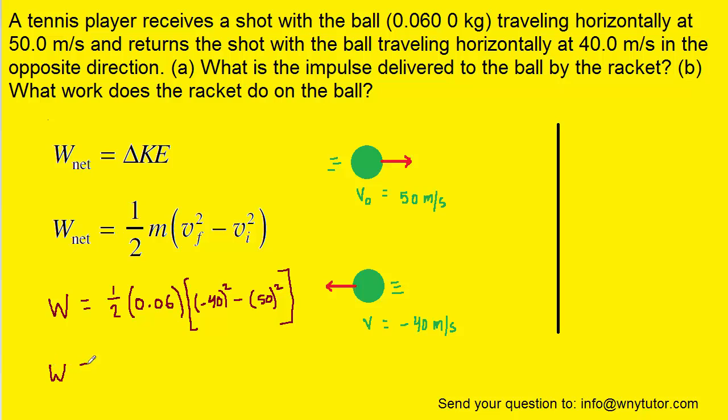And when you simplify that on your calculator, you should get approximately negative 27.0 joules, and that would be the correct answer for the work that the racket does on the ball.